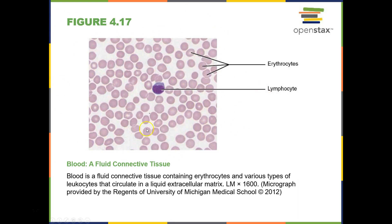Now let's look at our fluid connective tissue. Blood is our first fluid connective tissue. Blood is made up of red blood cells as well as multiple white blood cells — this is one white blood cell called a lymphocyte. The matrix of blood is a watery matrix composed predominantly of water and dissolved solutes, known as plasma. Plasma pulls blood around allowing it to do its job. Blood functions in movement of materials, protection, and nutrient movement — red blood cells take oxygen to our cells and bring waste products away. White blood cells function in protection from potential invaders.